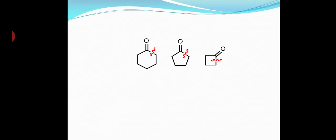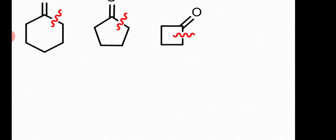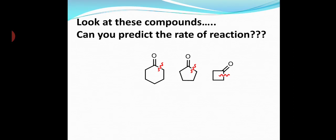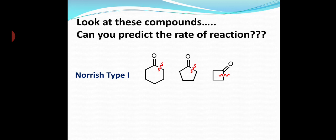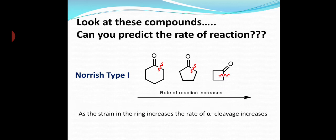Look at these cyclic compounds. As we go from cyclohexanone to cyclopentanone to cyclobutanone, the rate of the Norrish Type 1 reaction increases. As the ring strain increases, the rate of the reaction also increases.